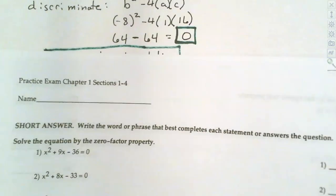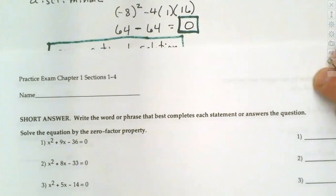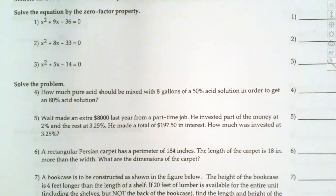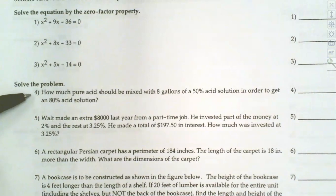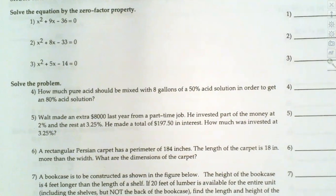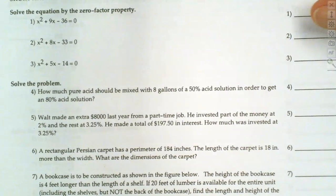Let's look at a mixture problem — question four. I think we're all pretty comfortable with zero factor. A lot of times students really struggle with the setup on these mixture and investment problems. So we're going to look at question four now. This is a mixture problem where we're mixing different concentrations of acid together to get the desired strength that we want.